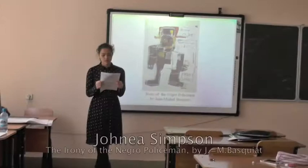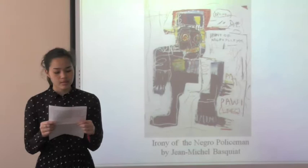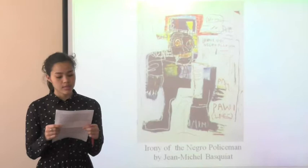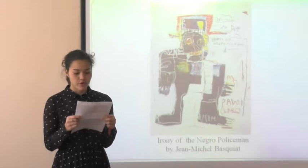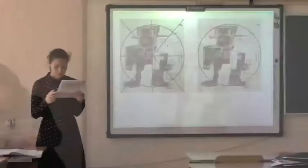This is the Irony of the Negro Policeman, painted by Jean-Michel Basquiat. The aim of this task is to analyze this piece of art as a product of visual thinking. In 1981, Jean-Michel Basquiat painted the Irony of the Negro Policeman, a painting that is much deeper than just the acrylic and art. The painting is a human figure with black skin wearing a white mask, a cartoon-like drawing with stray lines around the edges.